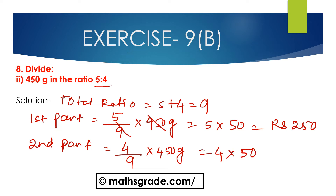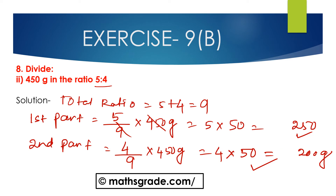Canceling 9 and 450, we get 50. So 5 multiplied by 50 is 250 grams. The second part is 4 multiplied by 50, which is equal to 200 grams. So dividing 450 grams in the ratio of 5 is to 4, the first part is 250 grams and the second part is 200 grams.